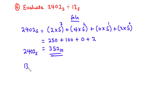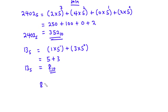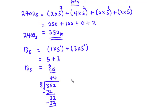Now, let's work on 13 base 5. 13 base 5 is also equal to 1 times 5¹ plus 3 times 5⁰. So 5¹ is 5 times 1 is still 5. 5⁰ is 1 times 3 is 3. So we have our final answer to be 8 base 10. Now, let's divide 352 by 8. 8 goes into 35 four times. 8 times 4 is 32. 35 minus 32 is 3. We drop the 2. 8 goes into 32 four times. 4 times 8 is 32. We subtract and we have 0. Therefore, 352 divided by 8 is equal to 44.